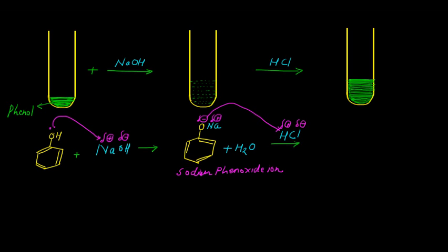It means that in the last step we already mentioned that formation of precipitate takes place. It indicates whatever original phenol is present in the test tube, that phenol is regenerated and that is why we get the precipitate of that phenol, plus simultaneously we get sodium chloride as a side product.